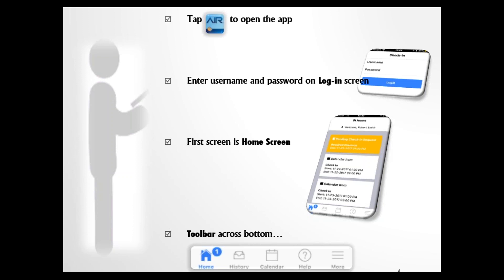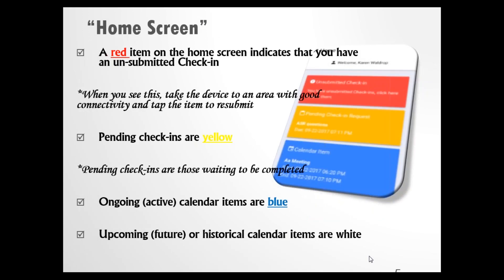Across the bottom, you'll see a toolbar with access to home, history, calendar, help, and more. The home screen is going to show you calendar items and check-in information. A red item on the home screen indicates that you have an unsubmitted check-in — you filled out the questionnaire properly, but for whatever reason it couldn't get uploaded to the server. When you see this, take the device to an area with good internet service and tap the red item to resubmit it. Pending check-ins are yellow — those are waiting for you to fill them out. Ongoing or active calendar items are blue, and upcoming or historical calendar items are white.